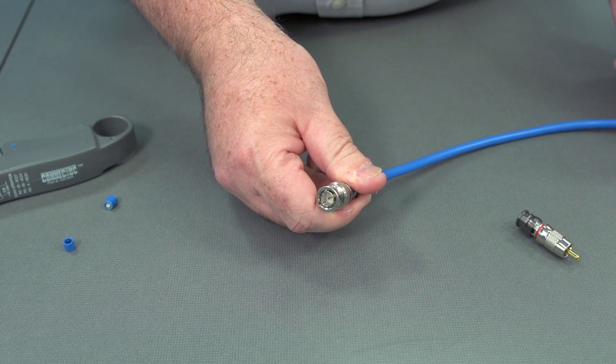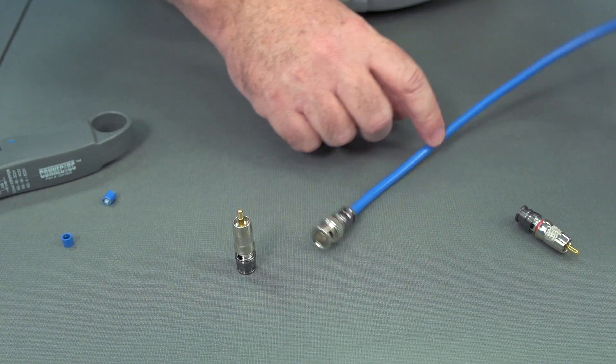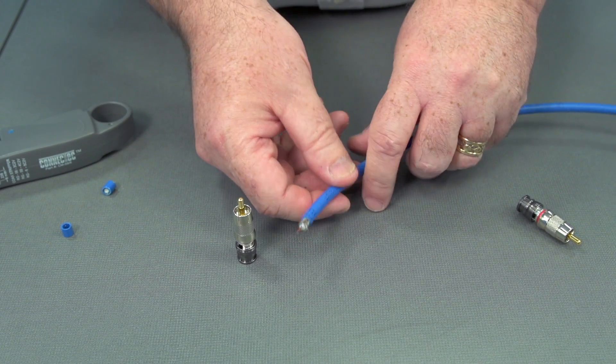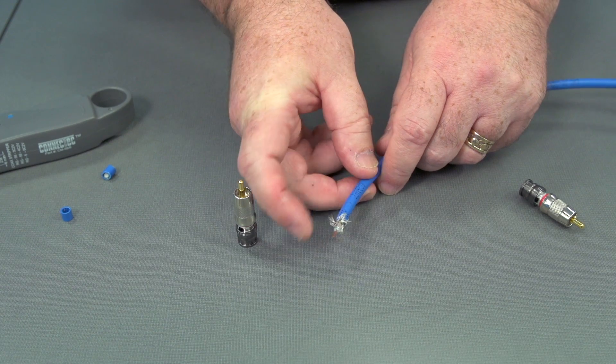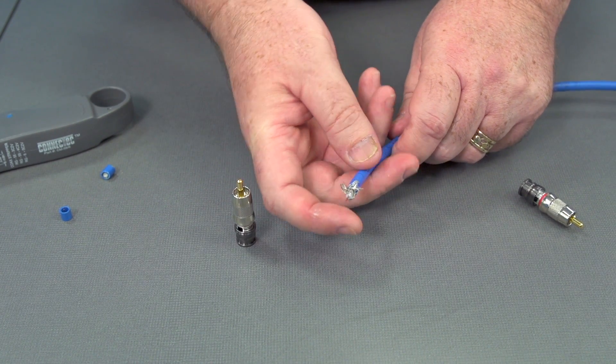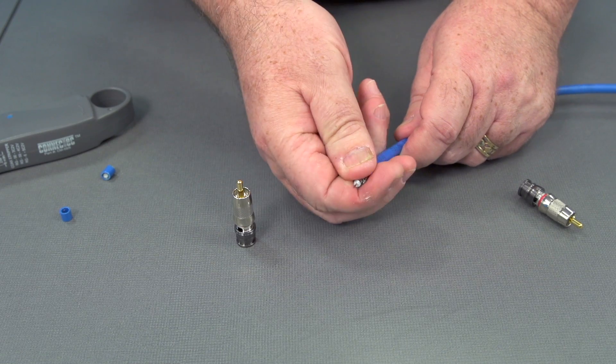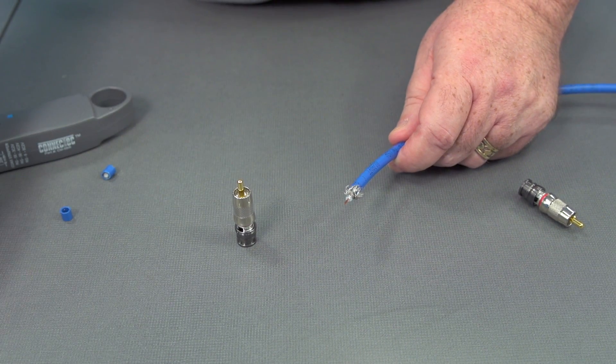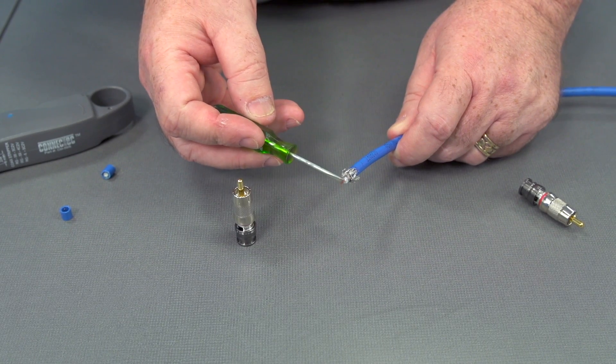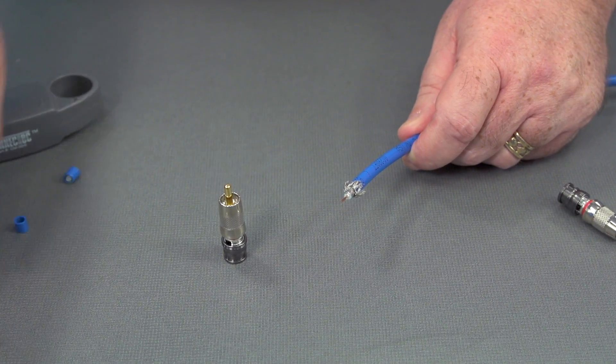Next we'll try an RCA connector. So we've prepared our cable. Let's fold back the braided shield. And we'll double check that we don't have any shield wires around the center conductor. We verified that.